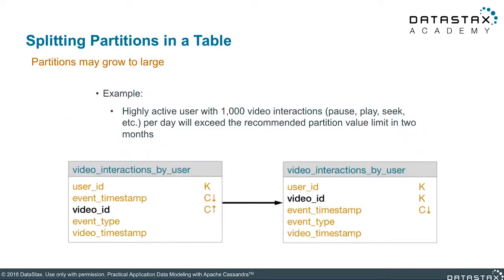The first technique we'll take a look at is splitting a table partition. Having partitions grow too large is a frequently encountered problem which may require some adjustment to how the partition key is defined. A typical example might be the case of a table that tracks actions performed by individual users. It may be possible that a highly active user may have more than 1,000 different video interactions per day, in the form of playing videos, pausing videos, skipping ahead in the video, and so forth.